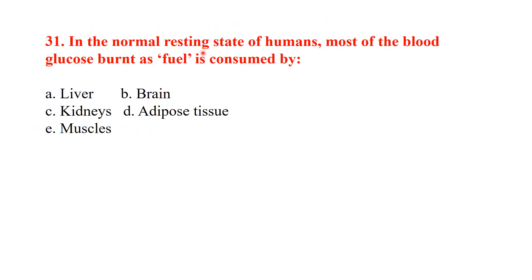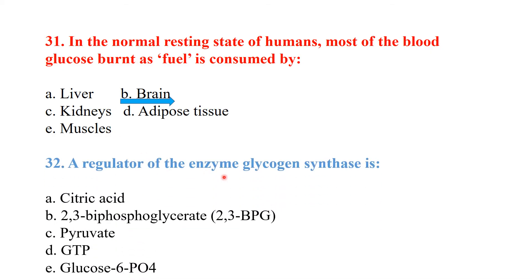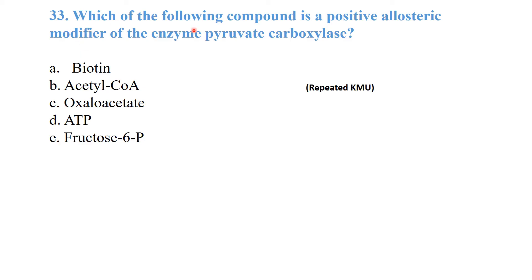In the normal resting state, most of the blood glucose burned as fuel is consumed by the brain. A regulator of the enzyme glycogen synthase is glucose-6-phosphate. Which of the following compounds is a positive allosteric modifier of pyruvate carboxylase? The answer is acetyl coenzyme A.